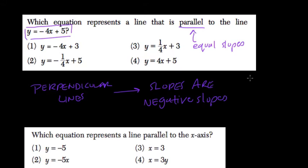For example, if one slope is 2, it's perpendicular to a slope of negative 1/2. You can think of flipping the number, because if you multiply 2 and negative 1/2, you get negative 1.